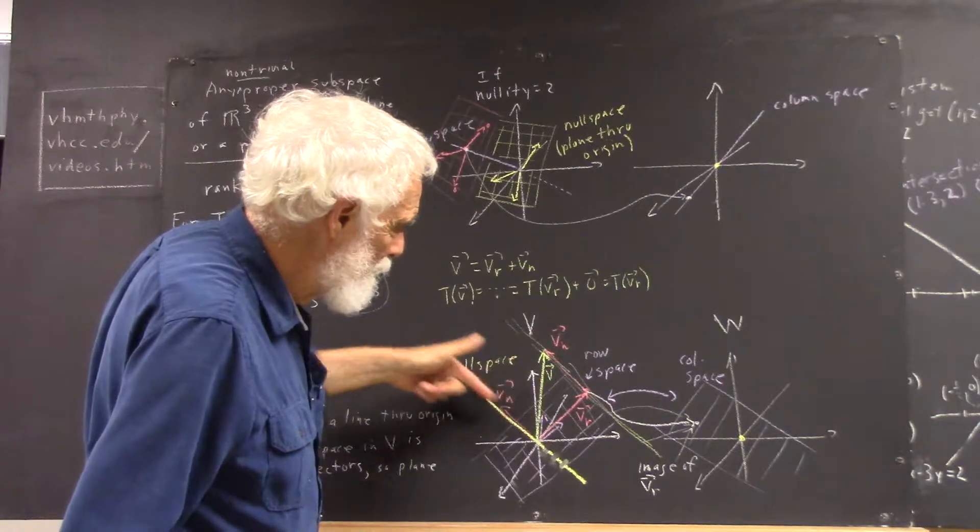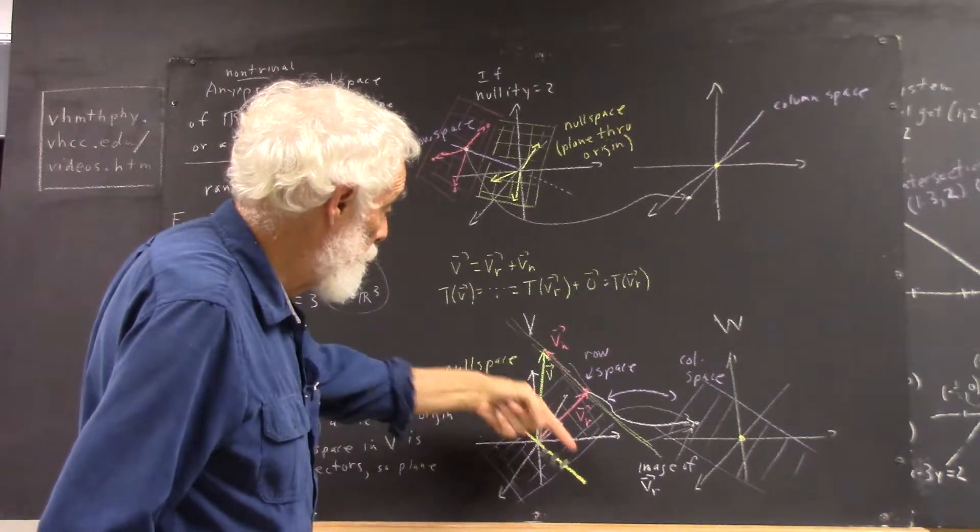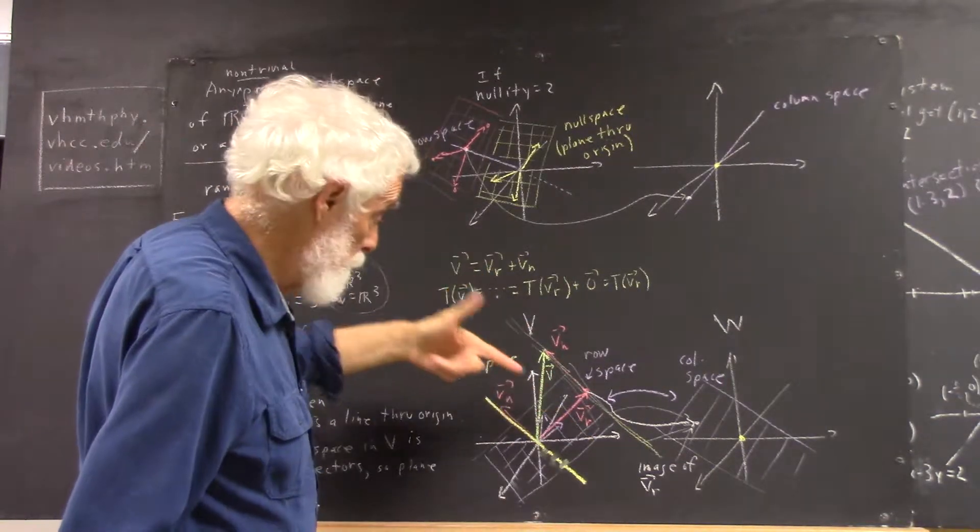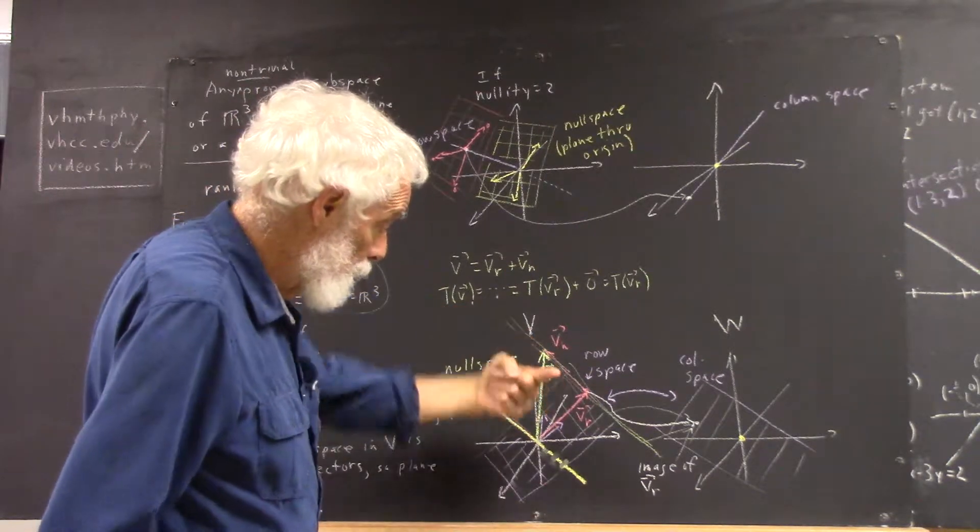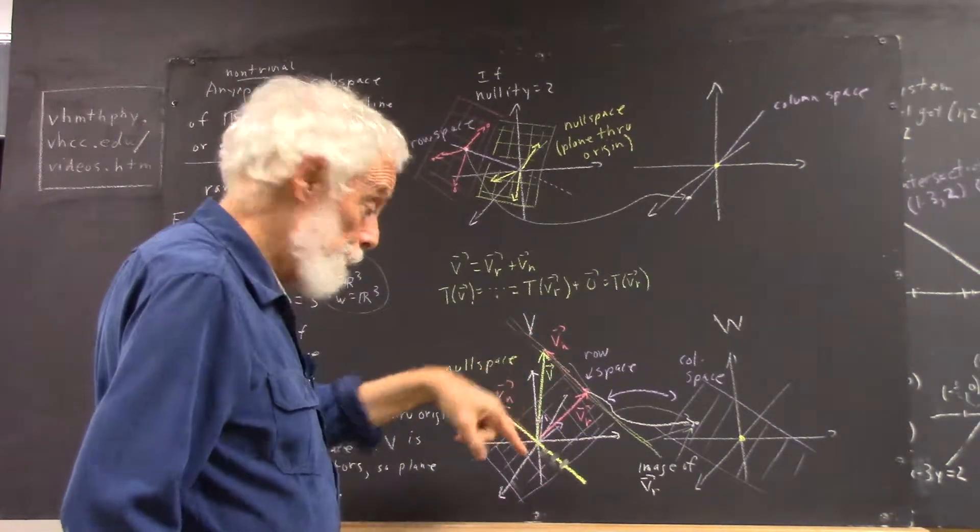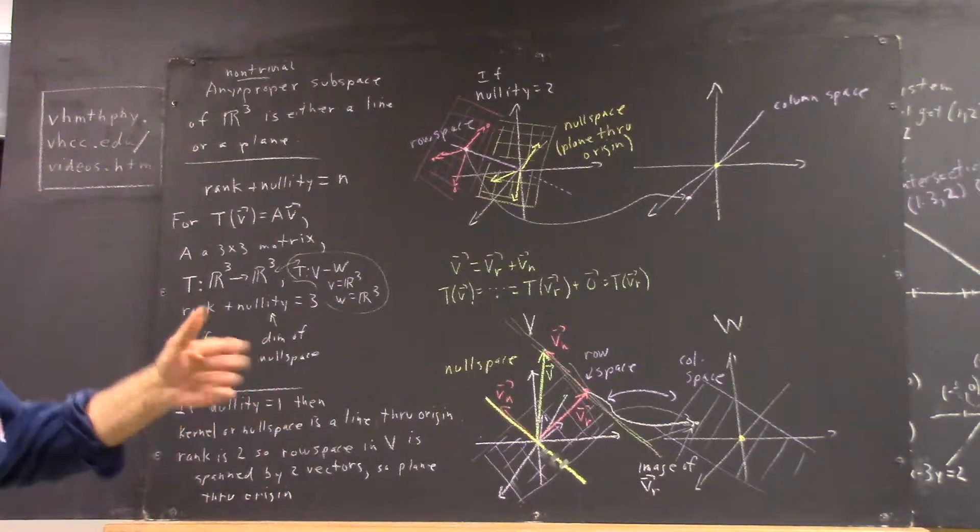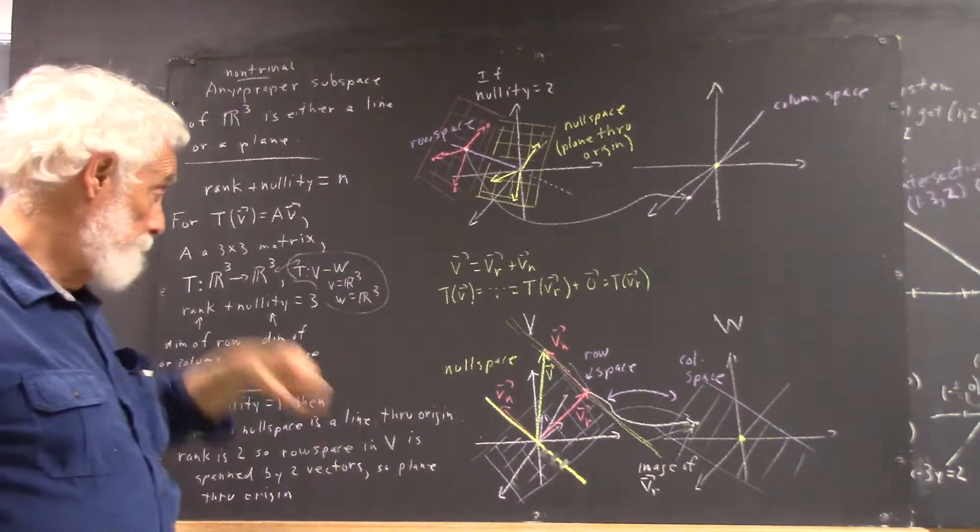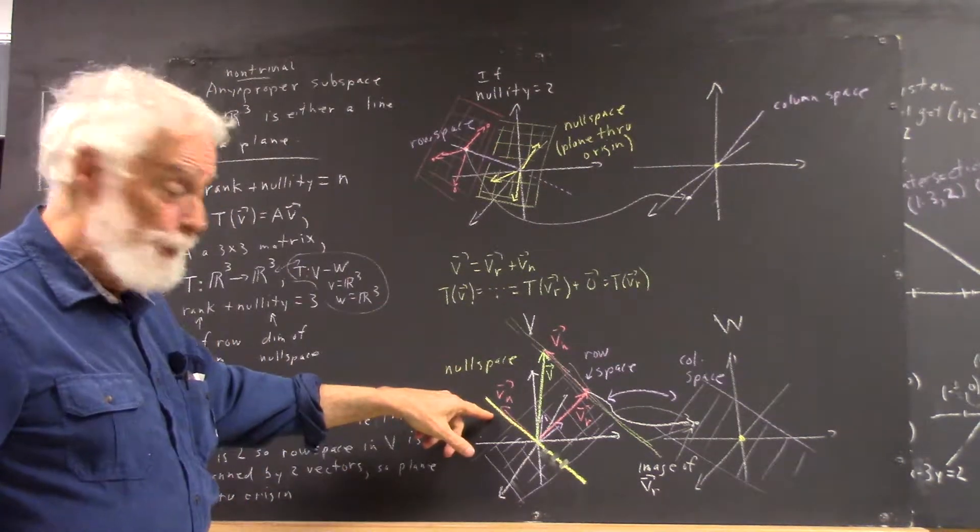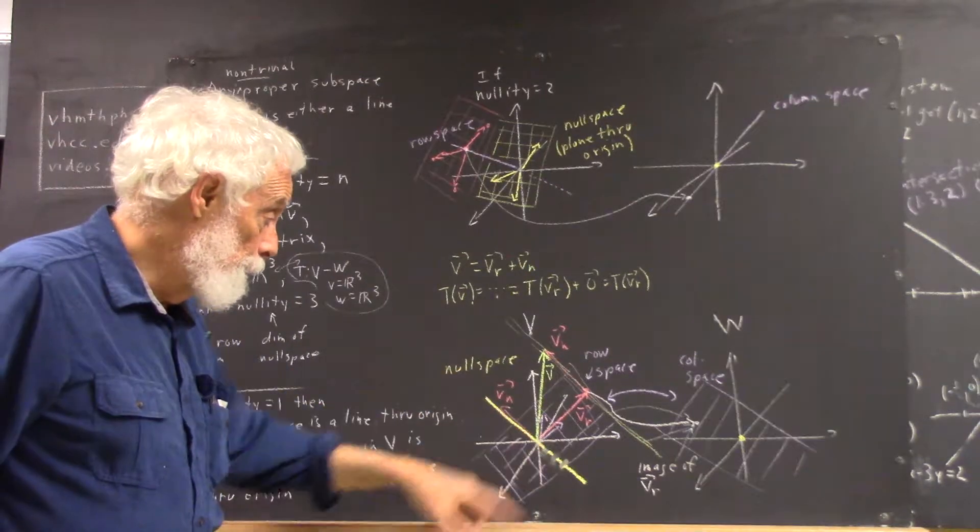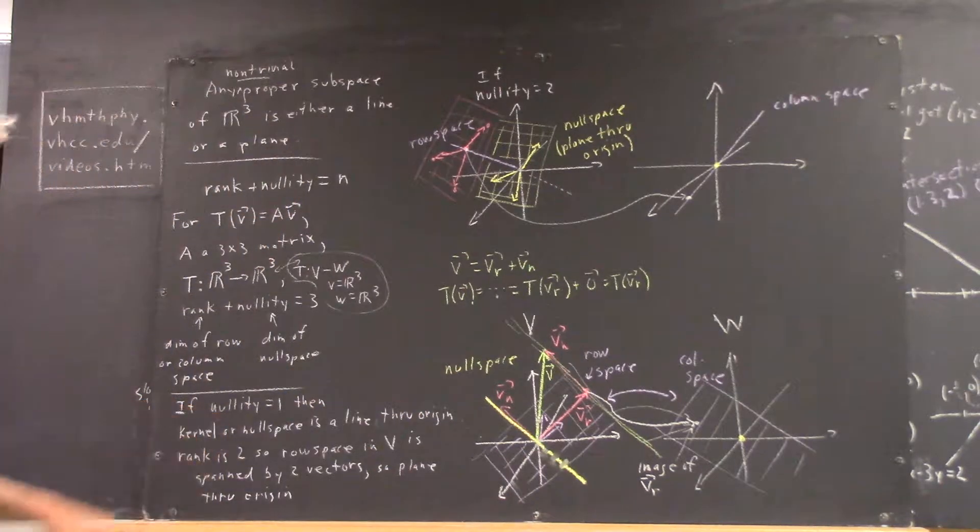this line could be in the plane of the X and the Z, or could be this way, or this way, or this way. Any direction in space just goes through the origin, depending on the transformation. So a general null space is just a line through the origin if the nullity is 1.